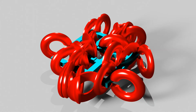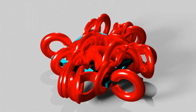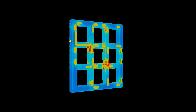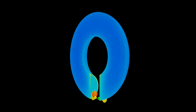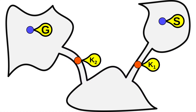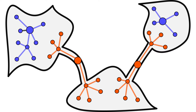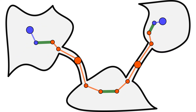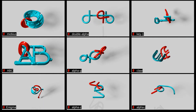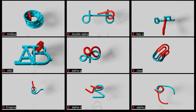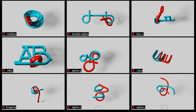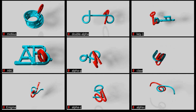Our approach discovers key configurations in narrow tunnels based on heuristics that pair up geometric features. We then bloom local solution trees rooted at each key configuration in parallel and connect the trees to find a final solution path that navigates the tunnels. Our results include solutions for puzzles that were impossible for existing approaches and challenging even for humans.